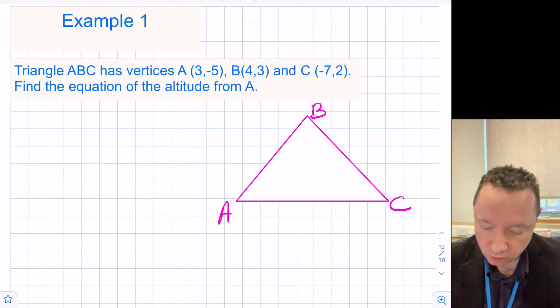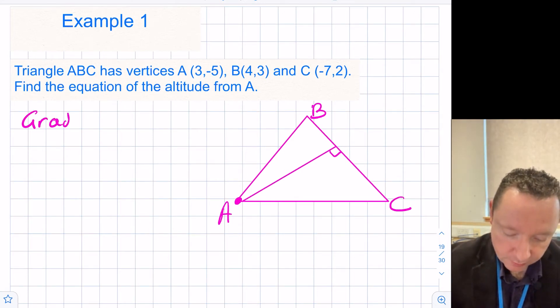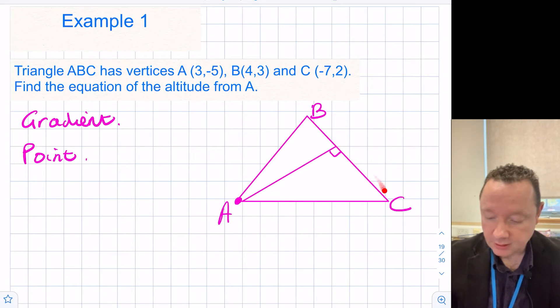This is the equation of the altitude from A. So if I call that A and go across, meeting that line at right angles. So remember, we always need two things to find the equation of a line. We need the gradient, and we need a point. Now, to find the gradient of a line, you need two points usually, but we don't have this point. It doesn't cut it in half. But we do have B and C. So we can find the gradient of B and C and use the fact that it's perpendicular to find the gradient of the altitude. So let's start doing that.